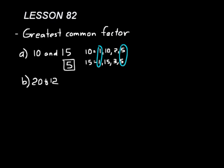Let's find the greatest common factor between 20 and 12. Let's write out 20's factors: we'd have 1 and 20, 2 and 10, and 4 and 5. Those are all the factors of 20. And for 12, we'd have 1 and 12, 2 and 6, and 3 and 4.